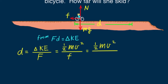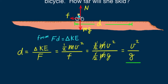After canceling M and the factors of one half, our problem is solved. She slides a distance v squared over g, which hopefully is less than the distance to the missing road surface. Does the equation make sense? The speed squared tells us that if she were traveling twice as fast, her distance of skid would be four times as far — twice the speed means kinetic energy is four times as much.